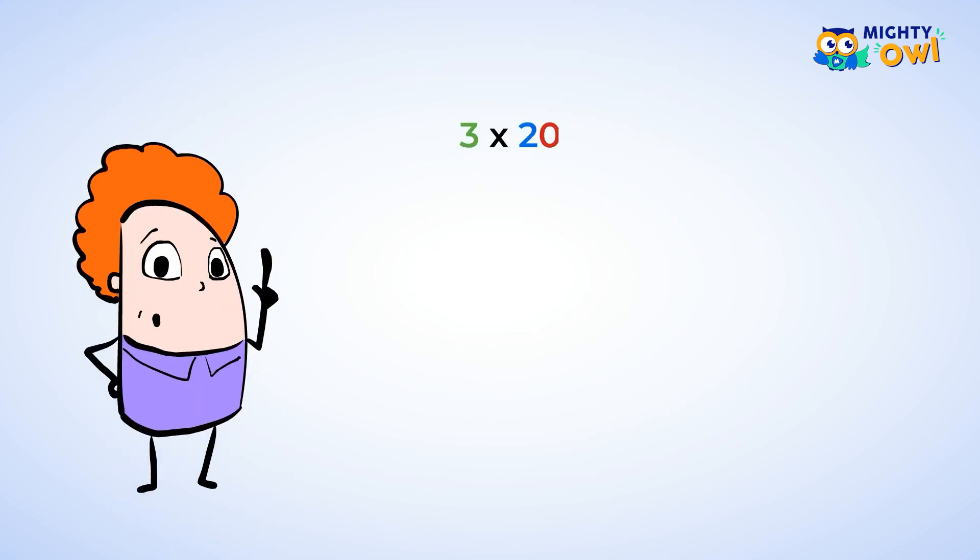Here's another problem. Three times twenty. Now, let's use the same strategy and patterns that you're already learning about. Start by multiplying three times two, and this gives you six. Now, you can do three times twenty. Just add a zero to the end of that answer. Wow! Sixty! And another way to think about it is that twenty is two tens. So three times two tens is equal to six tens, or sixty.